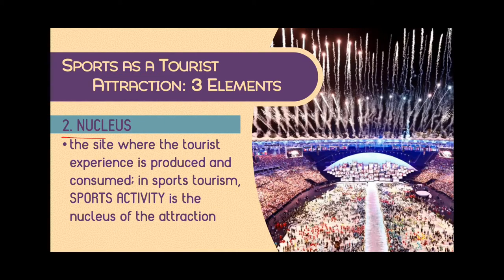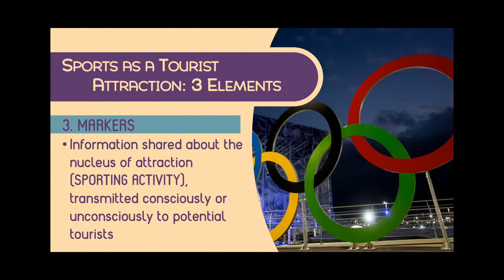The second element is the nucleus or the basic attraction. An attraction could be an activity or a destination. The site where the tourist experience is produced and consumed in sports tourism is a sports activity — that is the nucleus. The nucleus is the main thing happening at the given destination or attraction site: there is actually a sports activity happening there. So the first element is the tourist's sports-related motivation; the second is that the main activity occurring is sports-related. The third element is markers — information shared about the nucleus of attraction, which is a sporting activity, transmitted consciously or unconsciously to potential tourists.